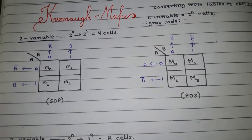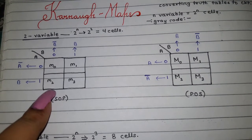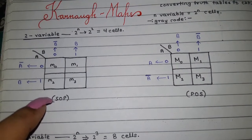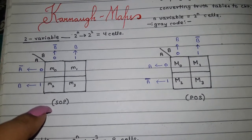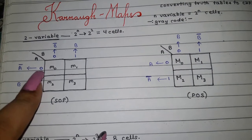Here we're writing SOP form. In SOP form, we write the min terms. In min terms, zero is complemented—here you see zero is complemented, zero is complemented.